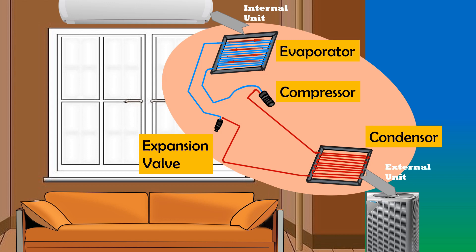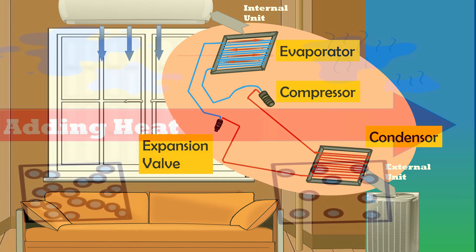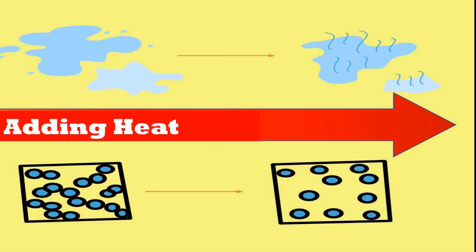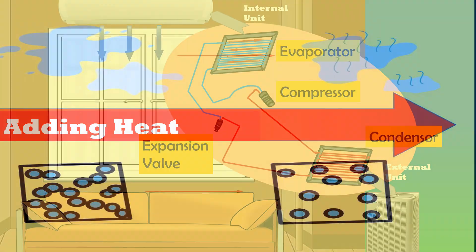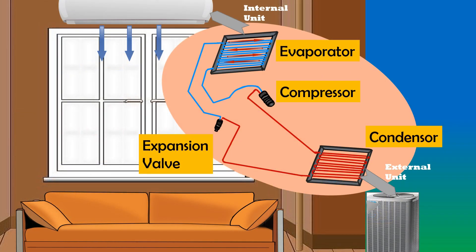This cool air flows out with the help of a fan. When liquids are heated, their molecules become more energetic and move more freely by overcoming the intermolecular attraction, and thus change into gas. Here, when the refrigerant liquid is heated, it evaporates and changes into hot gas.